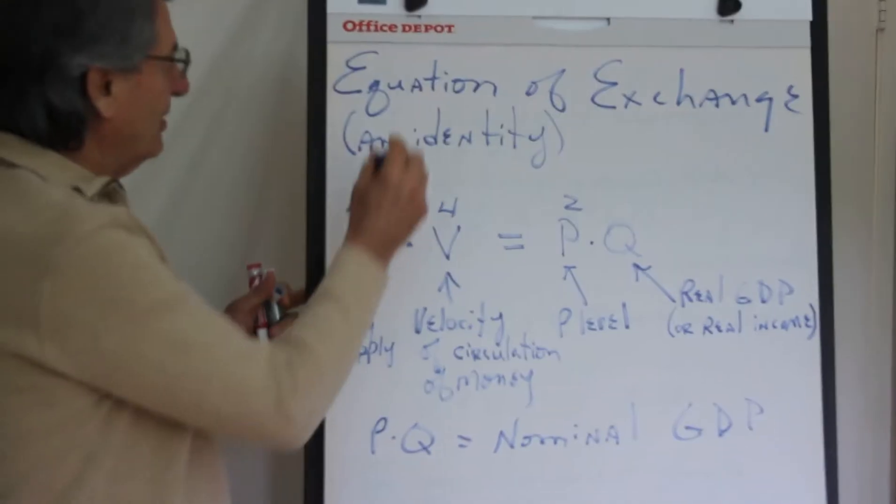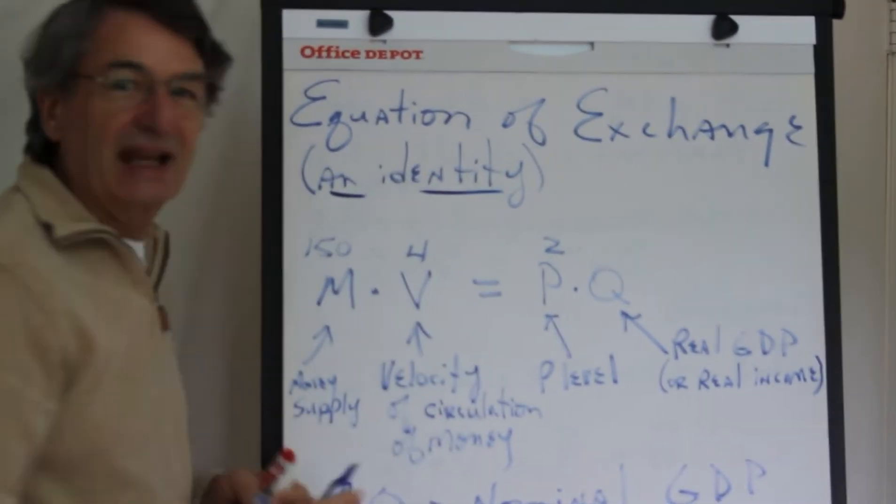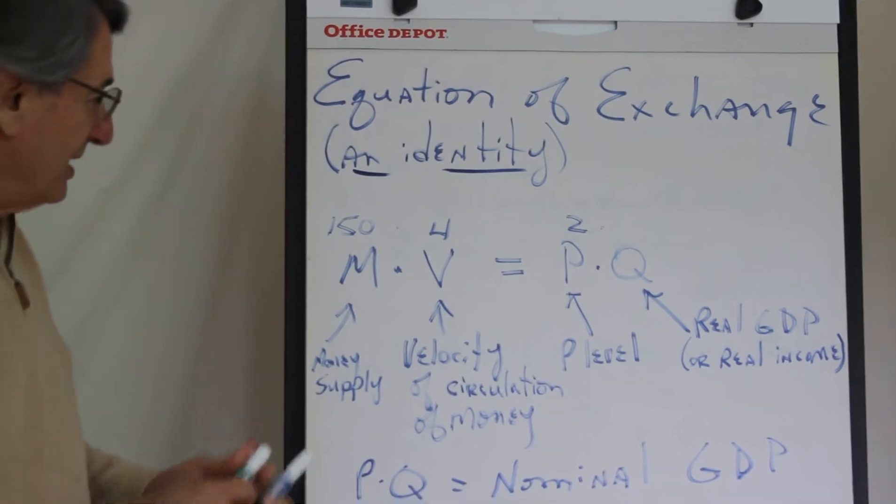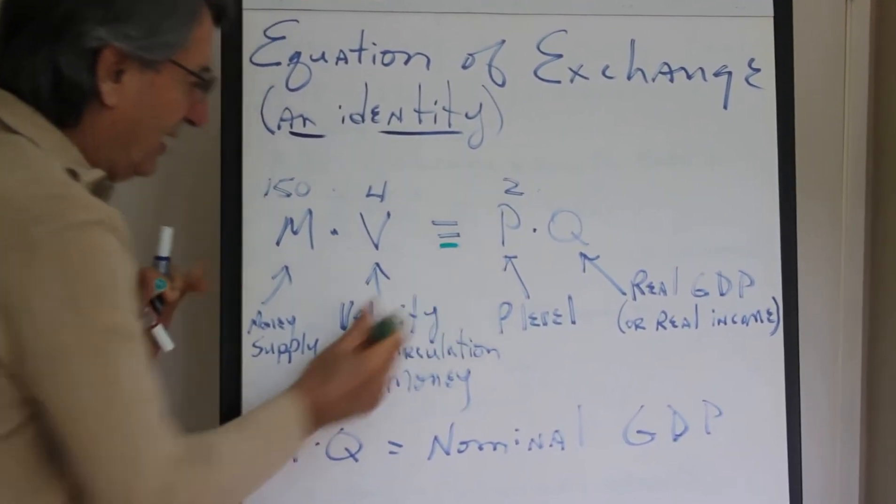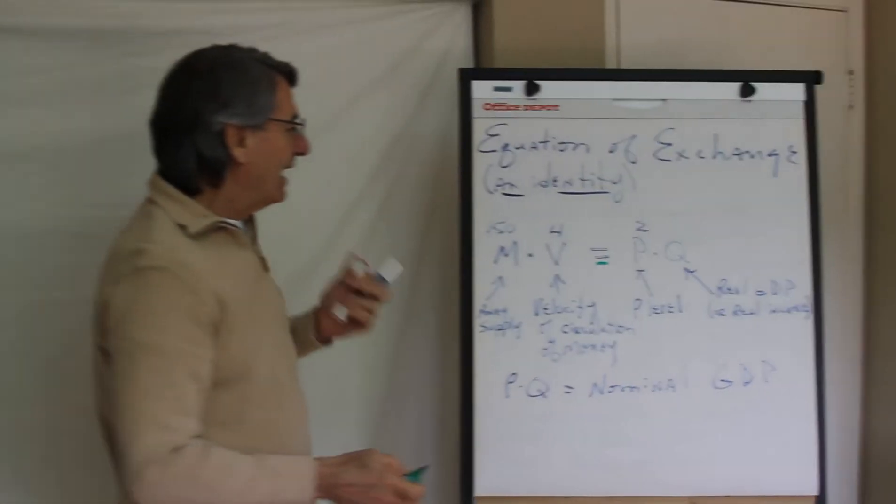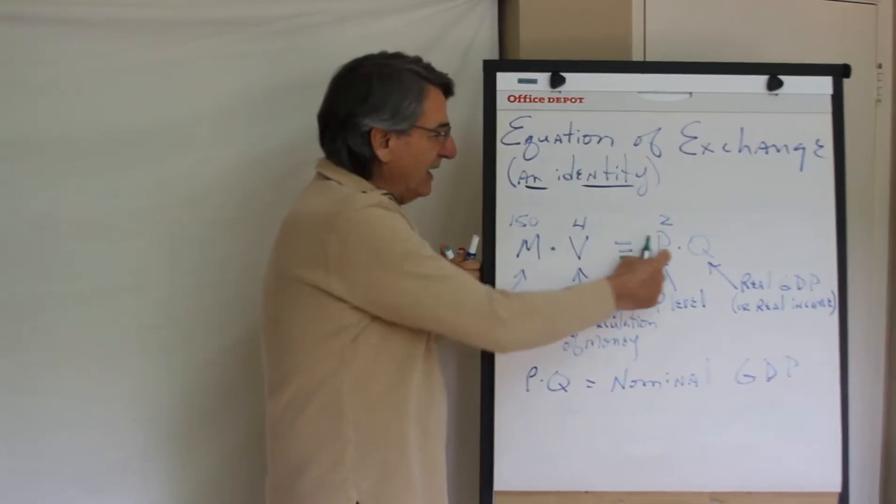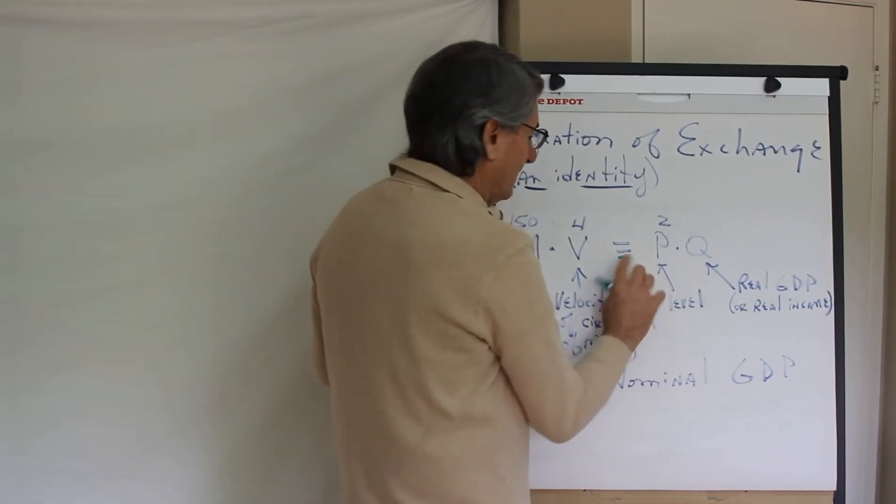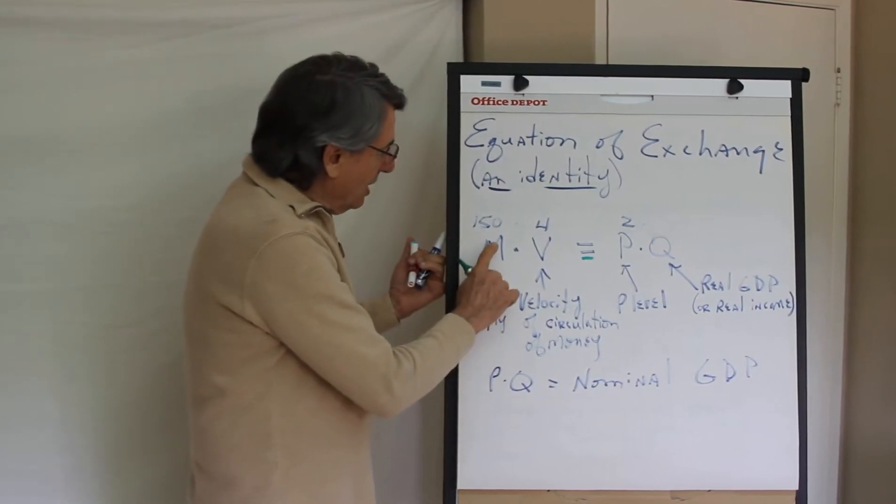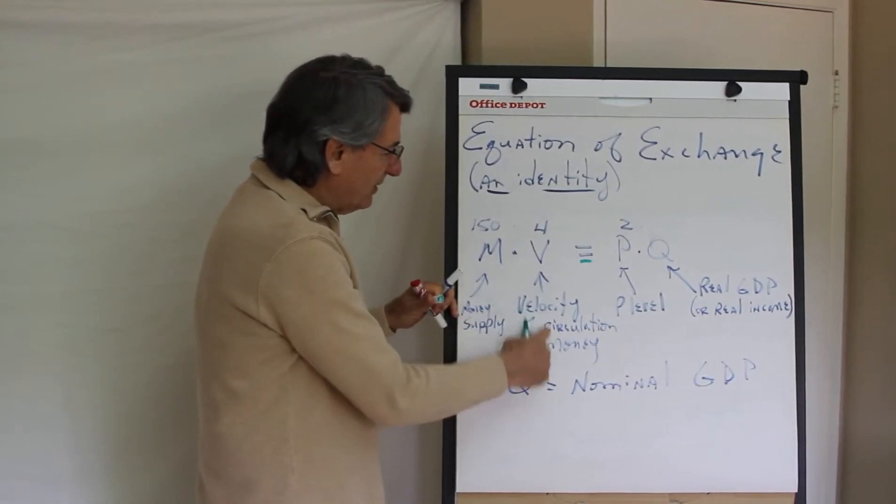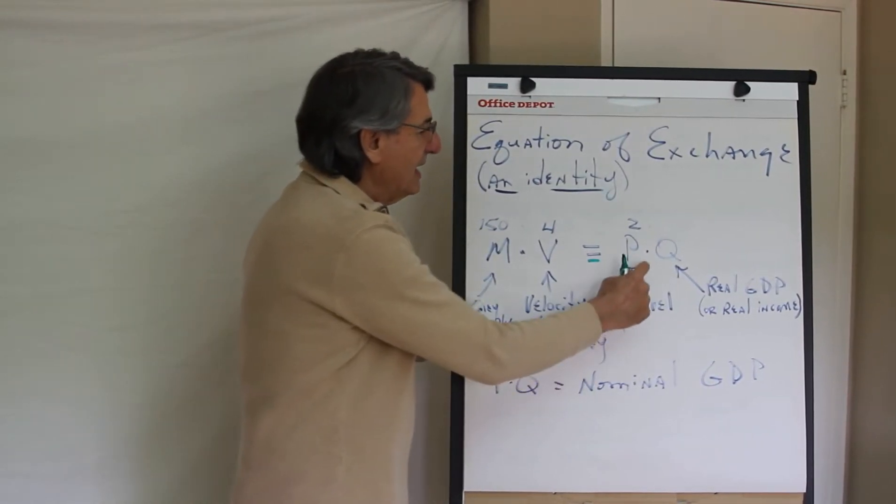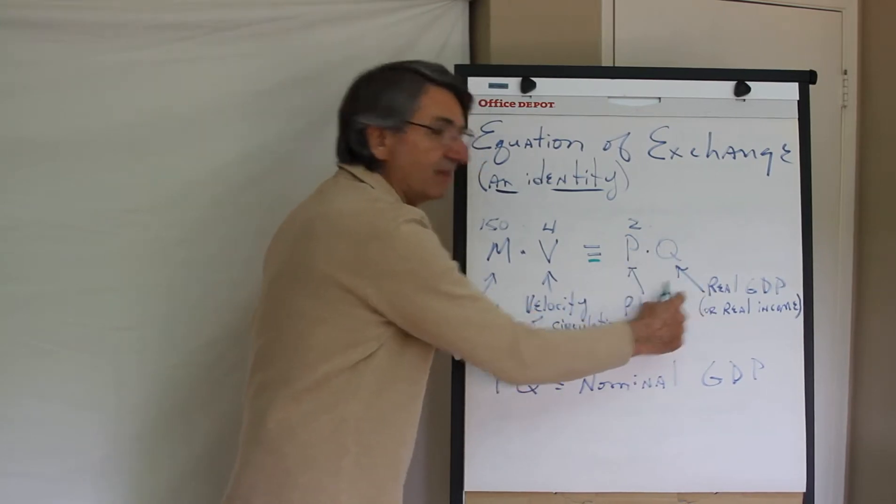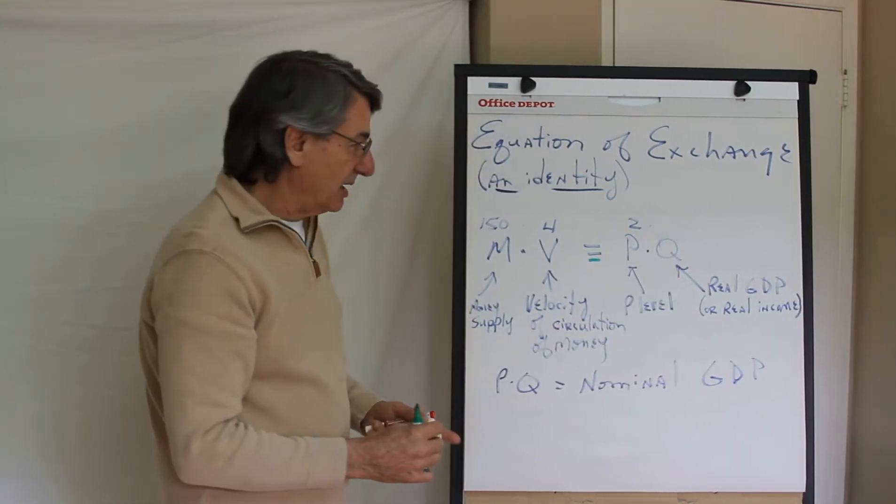The first thing is the equation of exchange is an identity. It is true by definition. It must be true because it's an identity. There are four terms: MV equals PQ, or PY sometimes. The money supply times the velocity of circulation of money equals the price level times the real quantity of goods produced in the economy.